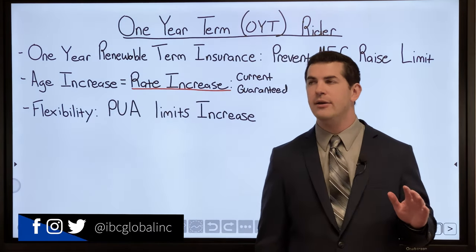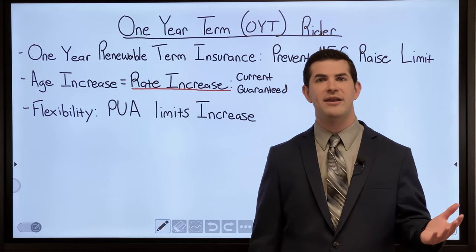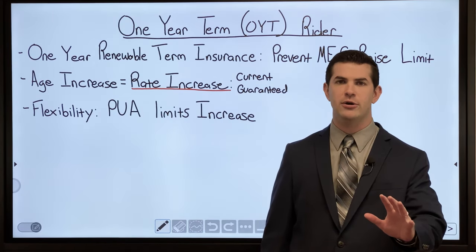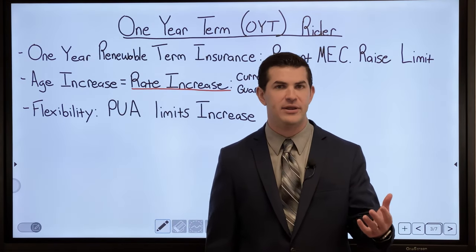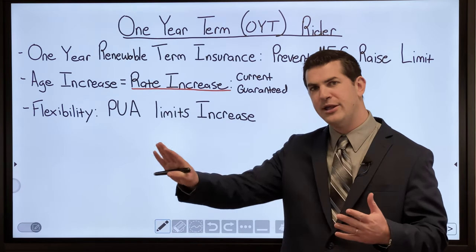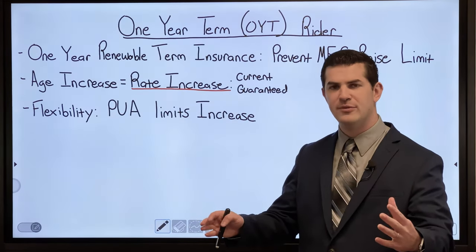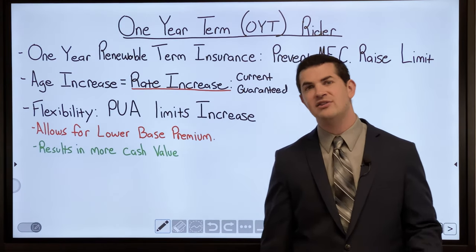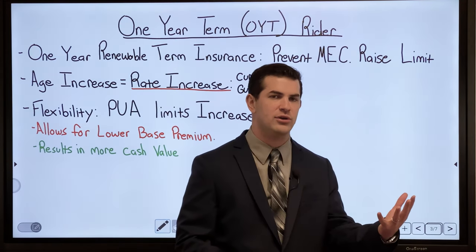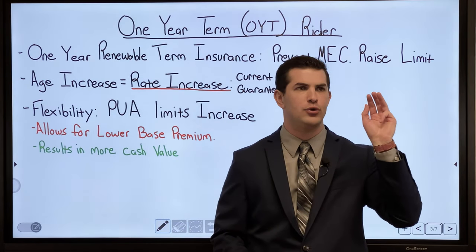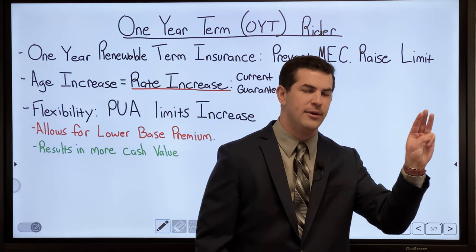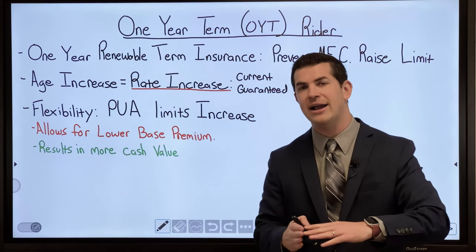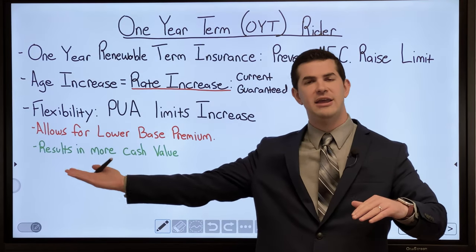Flexibility is, in my opinion, the main reason to add this rider to any life insurance policy. It allows me to add a ton of money into PUAs per year without underwriting, if the policy is set up right and the company allows it. It really optimizes cash value right off the bat. Without a one-year term rider, a company may allow you to pay 3x the base premium into PUAs per year — so with a $10,000 base premium, you could add up to an additional $30k in PUAs per year.